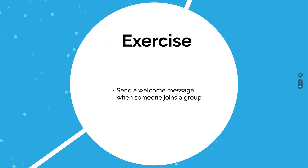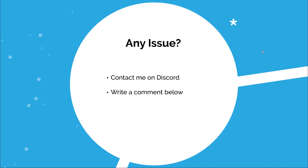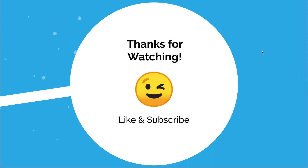I hope you have gotten a good understanding of what Action is and how to use it. Now let's look into an exercise you can do yourself. Create a feature where the bot sends a welcome message when someone joins a group. For this, you will need to create a checker action instead of a normal action — creating a checker action is very simple, you just need to create an action and add it to the checker service in the bot. The action will find the message saying someone has joined the group, and if it recognizes that message, it will send a welcome message to the group. If you have any issues or questions, you can contact me on Discord or comment below. Links for everything are in the description. Thank you for watching — like and subscribe if you enjoyed this, and I will see you later.